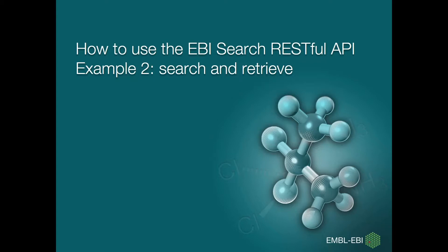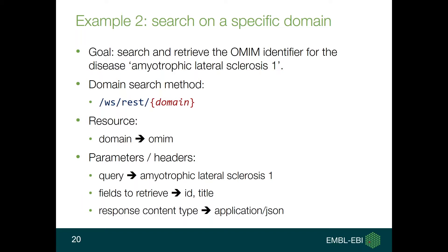The second example is about actually searching and retrieving something from the database we just explored. The goal is to search and retrieve an OMIM identifier associated with a specific disease — in this case, amyotrophic lateral sclerosis 1. You select the domain search method specifying OMIM as domain, then fill in the specific parameters: the query is 'amyotrophic lateral sclerosis 1' and the fields to retrieve are a comma-separated list — in this case, ID and title.